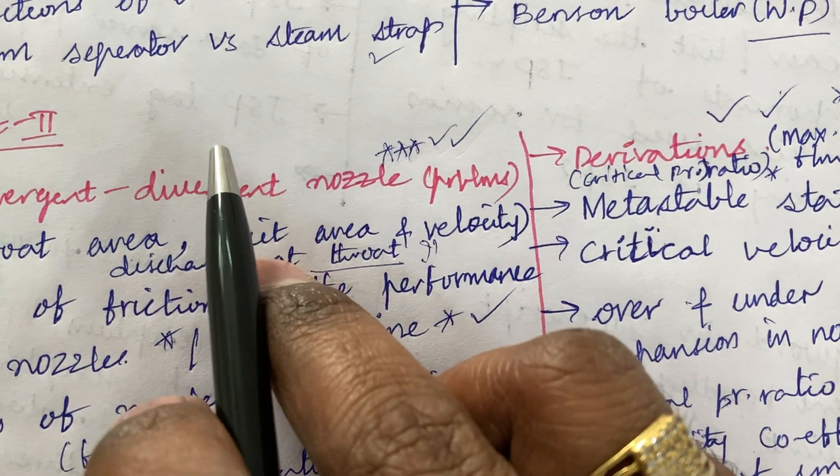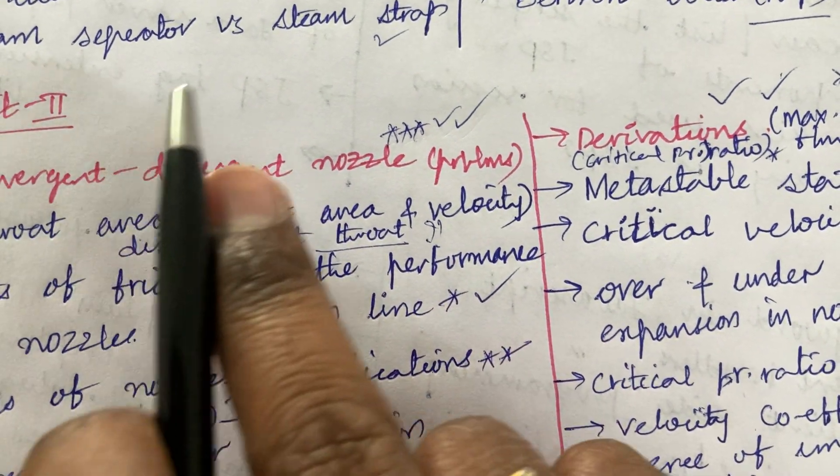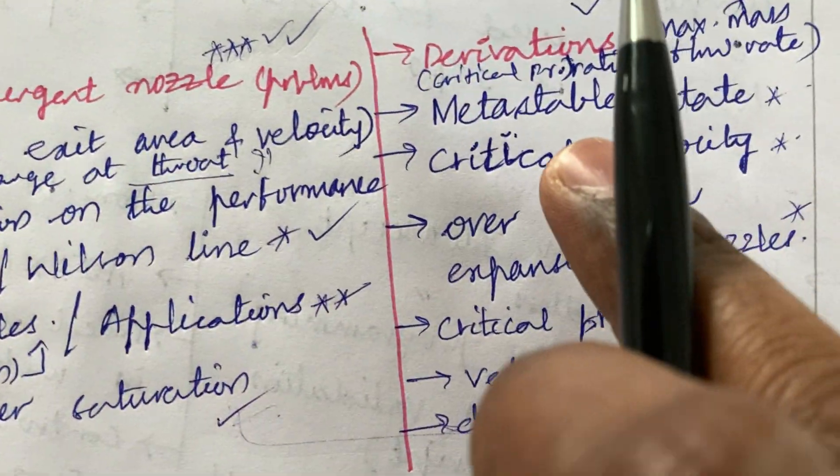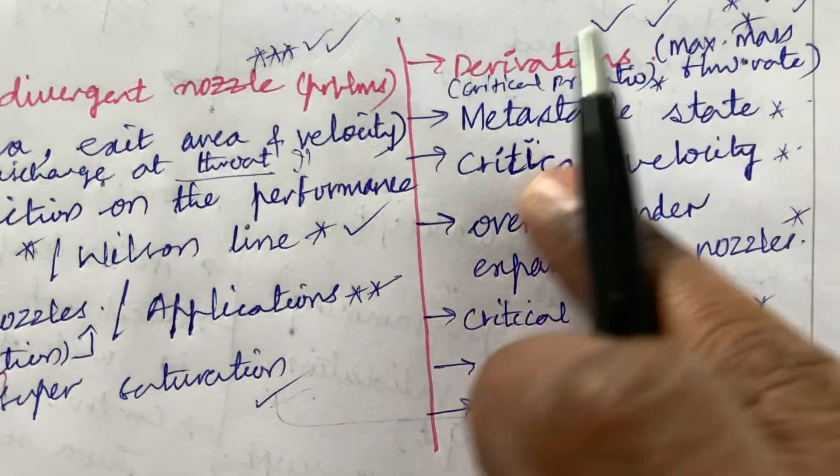Make sure to work out the nozzle types as well as the convergent divergent nozzle. You are going to get a problem for sure in one question. The other question may be a derivation as well as certain theory part.